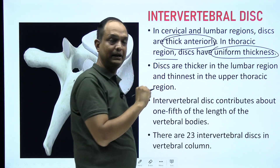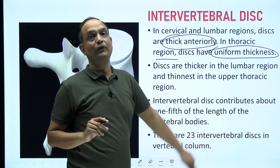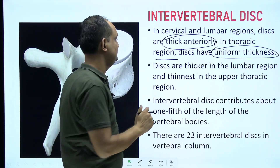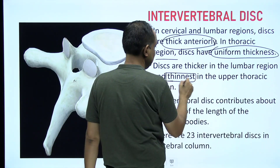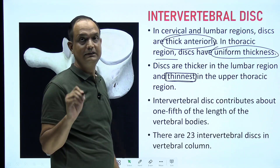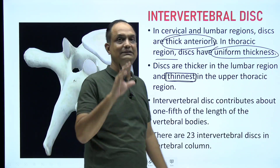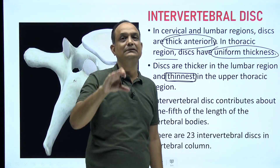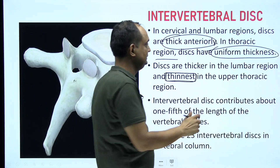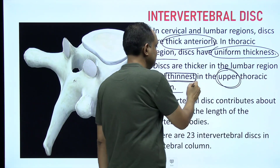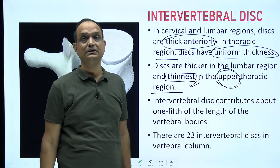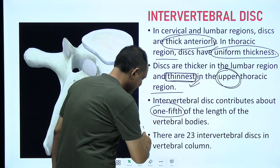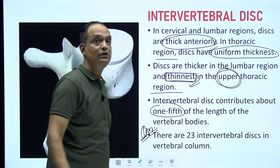In the cervical and lumbar regions, intervertebral discs are thick anteriorly. In the thoracic region, the discs are uniformly thick. The thinnest discs are present in the thoracic region, and specifically the upper part of the thoracic region has the thinnest intervertebral discs.